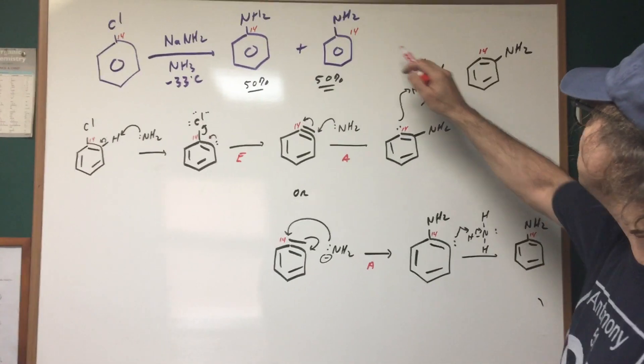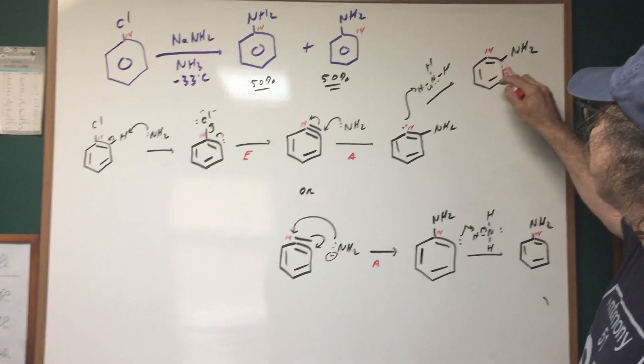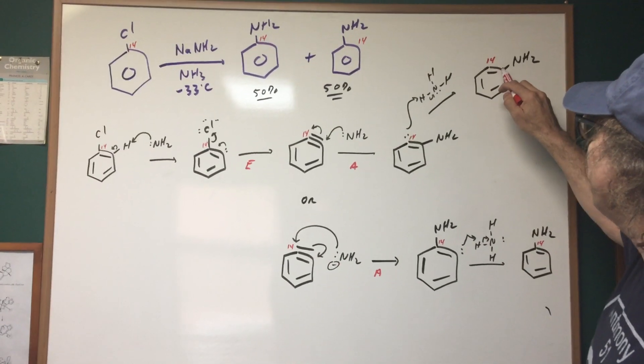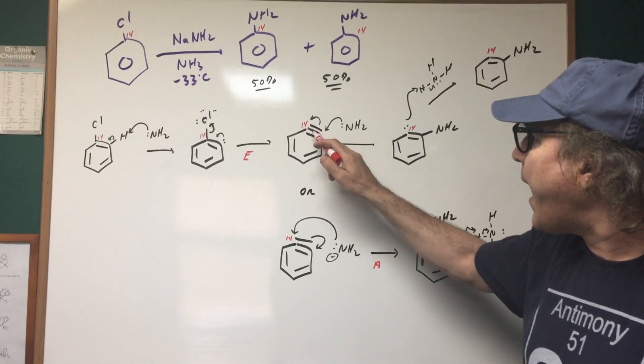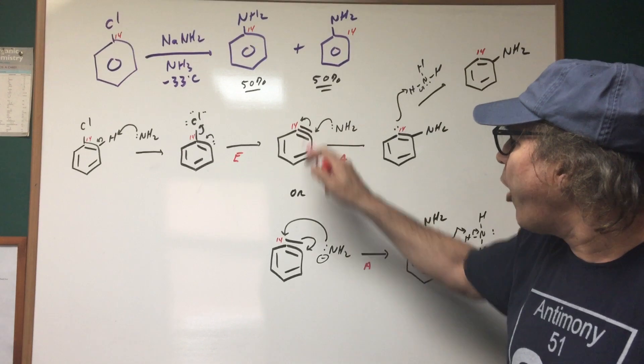And then simply pick up a proton and that would show how we form this. These are the same. As you can see, I put on the NH2 on the carbon adjacent to the radio label. Or if you go back, instead of hitting this carbon, why don't we make the nucleophile attack the radio labeled carbon?